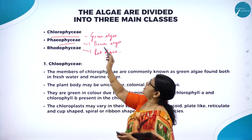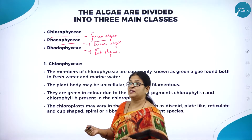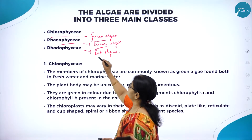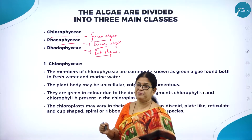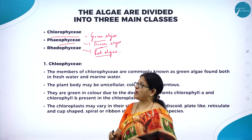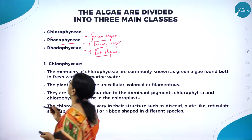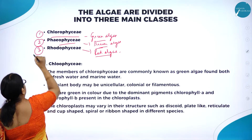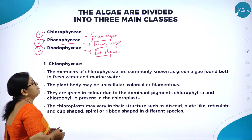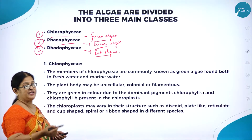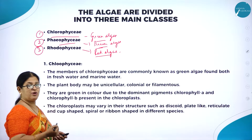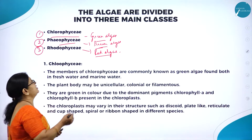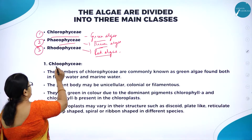The three very important classes of algae are classified based on the type of coloring pigment found in them. Chlorophyceae is called green algae because of the green coloring pigment, Phaeophyceae is called brown algae because of the brown coloring pigment, and Rhodophyceae is called red algae because of the red coloring pigment.